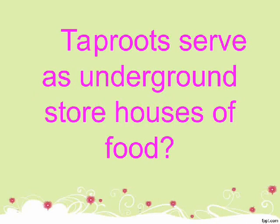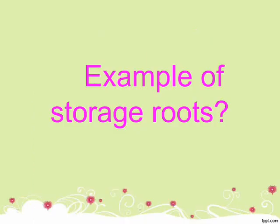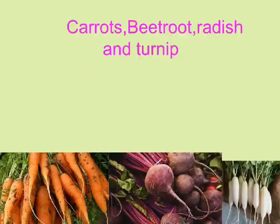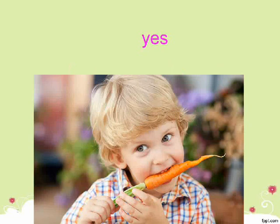Taproots serve as underground storehouses of food. These are called storage roots. Examples of storage roots include carrots, beetroot, radish, and turnip. Storage roots are edible.